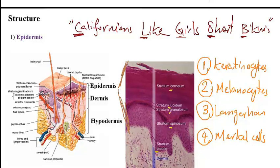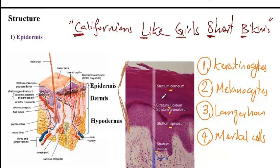Moving on, the stratum spinosum provides resistance to mechanical stress. The next layer, stratum granulosum, provides waterproofing properties to the skin and is where keratinocytes start to lose their nucleus and die. Stratum lucidum is found only in thick skin such as the hairless skin at the sole of the foot and the palms. Finally, the most superficial layer, stratum corneum, contains multiple layers of keratin-filled, flattened keratinocytes that provide physical protection.